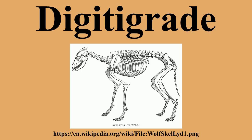Examples of digitigrade animals include: mesonychids, dinosaurs, birds, pigs, hippos, cats, hyenas, dogs, elephants, capybara, and Trucedocynodon.